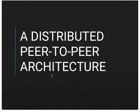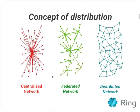Let's explain what the distributed hash table is. First, we want to make a distinction between three types of networks. We have the centralized network, which we all know — Google, YouTube, and all of that. Then we have the federated network and the distributed network. Out of curiosity, who could name a federated network? Identica — I didn't know that one.